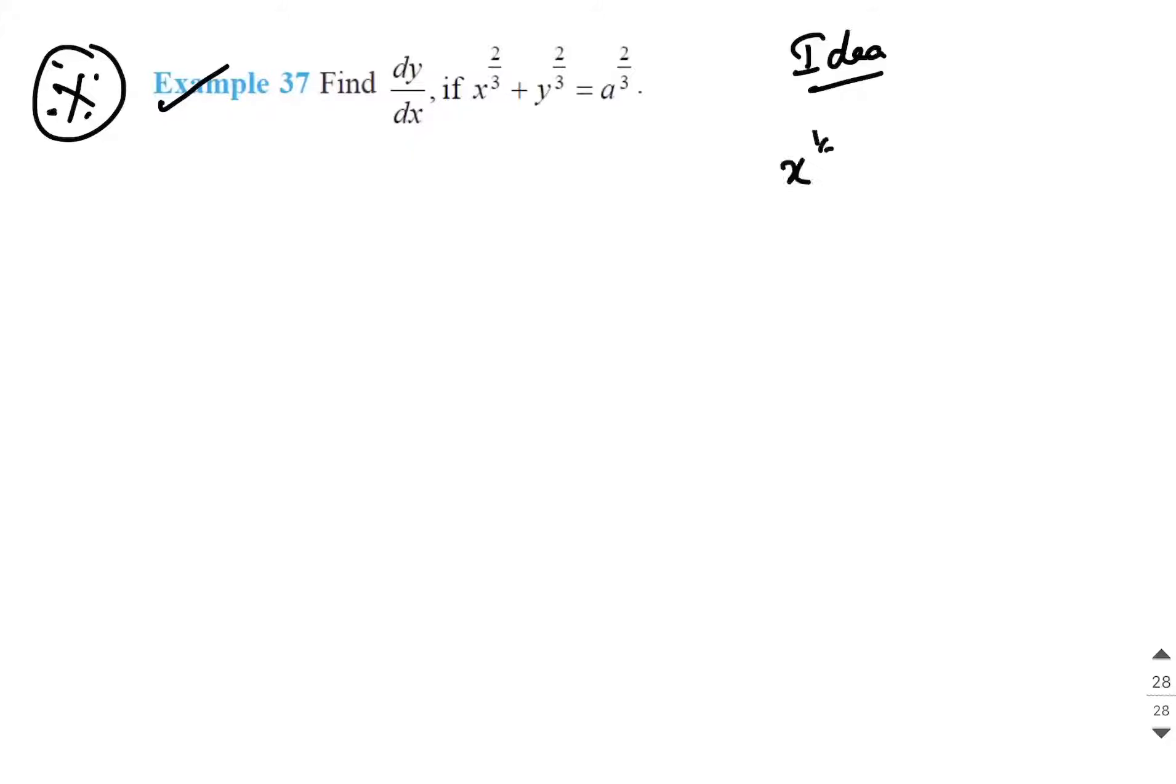I have x power 1 by 3 the whole square plus y power 1 by 3 the whole square is equal to a power 1 by 3 the whole square. This x power 1 by 3 I will call it as some capital X. So, capital X square plus capital Y square is equal to capital A square. If you observe this, this looks like the equation of a circle with center at origin.